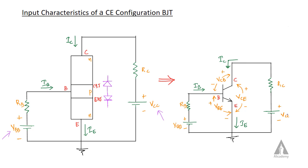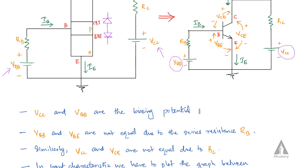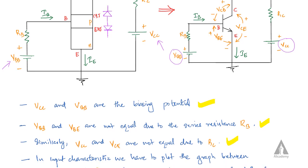The voltage between base and emitter is VBE, which is not equal to the biasing voltage VBB. Similarly, VCE is not equal to VCC. VBB and VCC are the biasing potentials. VBB and VBE are not equal, and VCC and VCE are not equal.